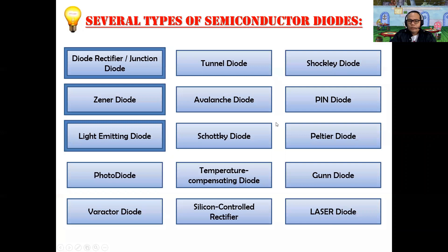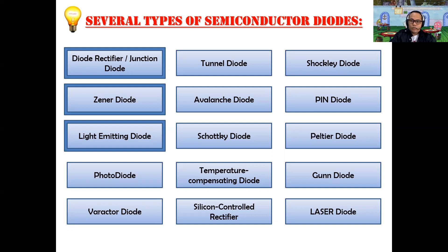These are the several types of semiconductor diodes: diode rectifier (sometimes called junction diode), Zener diodes, light-emitting diodes, photodiode, varactor diodes, tunnel diodes, avalanche diodes, Schottky diodes, temperature compensating diodes, silicon control rectifier, pin diodes, Peltier diodes, gun diodes, and laser diodes. LASER stands for light amplification by stimulated emission of radiation. There are actually several types, but I highlighted three that are most commonly used in the electronics engineering industry.